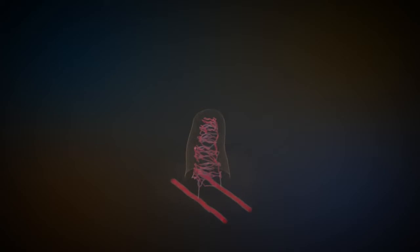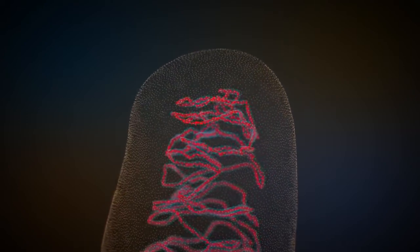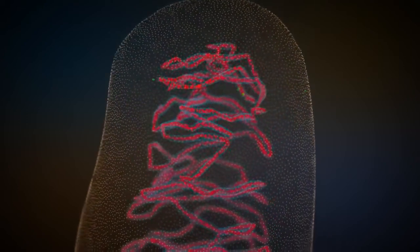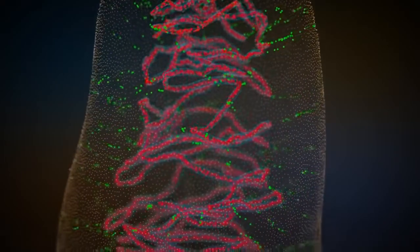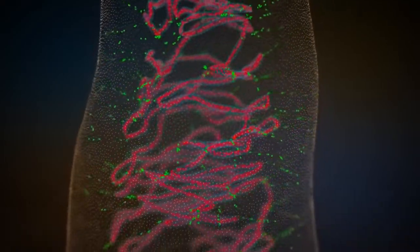Each villus contains blood capillaries and a lymphatic capillary called lacteal, which we will see later. The nutrients marked green here are absorbed by the villus and transferred to the blood capillaries.